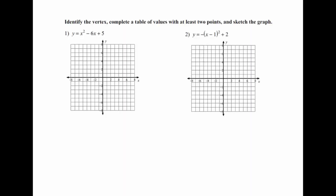On these first two problems we are supposed to identify the vertex, complete a table of values with at least two points, and sketch the graph. I'm going to start off looking at my equation — it depends on which equation and what kind of equation I have as to how I start. Number one is in standard form, and so there's a formula we use in standard form to help us find the vertex, and that formula is negative b over 2a.